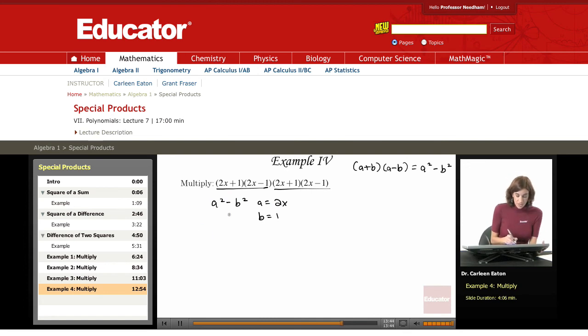Substitute these values in. For a, I'm going to have 2x squared minus, so that's 2x squared, minus 1 squared. 2 times 2 is 4, so that's 2 squared, and then x squared minus 1.